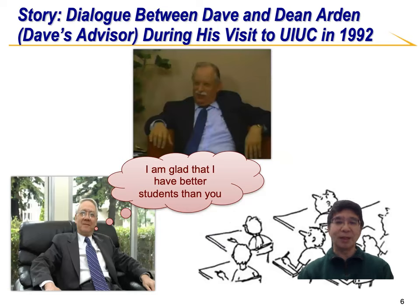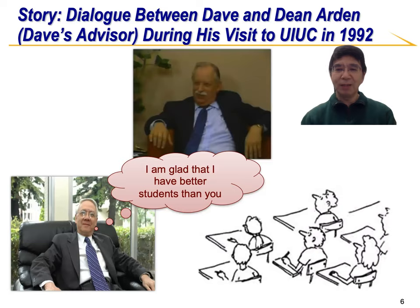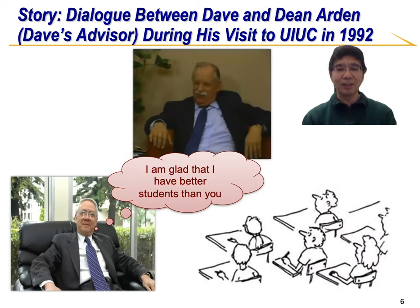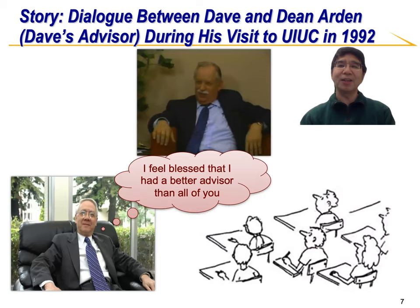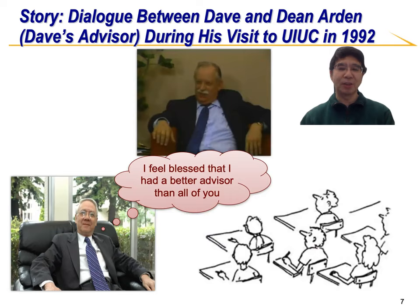Talking about the student and advisor relationship, I'd like to tell you this story. There was an interesting dialogue between Dave and his PhD advisor at MIT, Professor Dean Arden, who visited Dave in 1992 at Illinois. Dave invited all his students to attend and meet with Professor Arden. This is how he introduced his students to Professor Arden: he said, 'I'm glad I have better students than you.' And then he turned around to his students and said, 'I feel blessed that I have a better advisor than all of you.' This is very typical of Dave — witty, full of humor, always being modest, and always shining the spotlight on someone else.